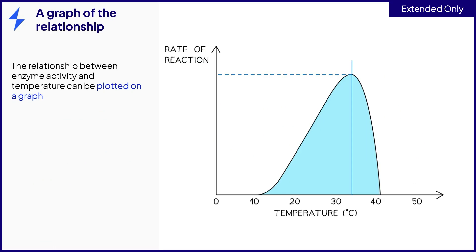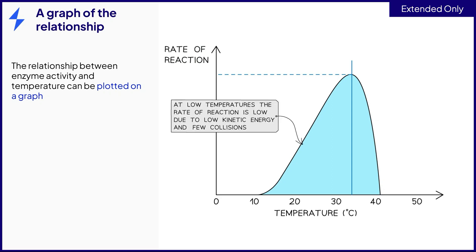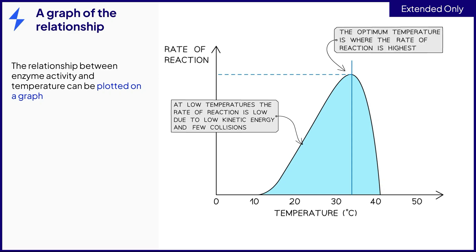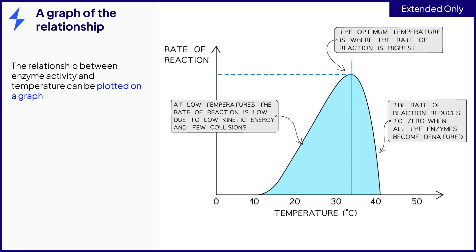It is possible to produce a graph of the relationship between the rate of reaction and temperature. We can see that between 10 and 30 degrees, the rate of reaction increases with temperature, as the kinetic energy of the enzyme and substrate molecules increases, causing there to be more collisions. The optimum temperature is where the rate of reaction is highest; on this graph it is around 34 degrees Celsius. Enzymes in our body tend to have an optimum temperature between 37 and 40 degrees, in line with our core body temperature. Above the optimum, the rate decreases to zero as the enzymes become denatured.